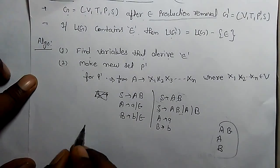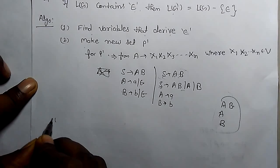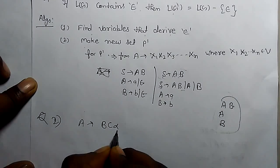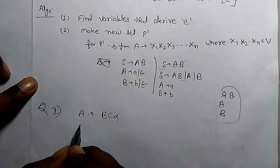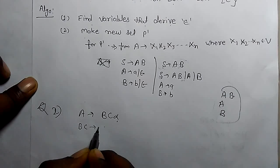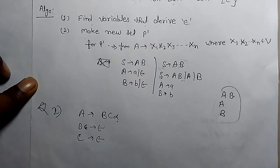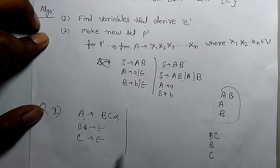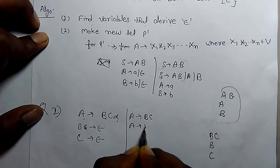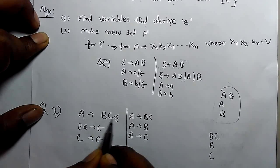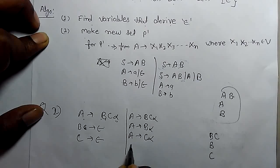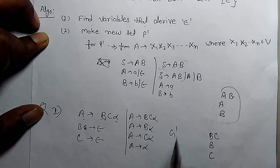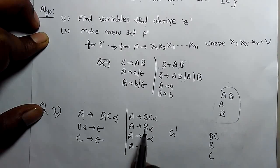Now a second example: A derives BC alpha, where alpha is a terminal, and B and C both derive null. What we have to do — for A derives BC, the combinations of B and C are: BC, B, or C. So we directly write A derives BC alpha, A derives B alpha, A derives C alpha. Since alpha is associated with each production, we write alpha with each one. And in the last we write A derives alpha. This gives us new grammar G dash with new production rule P dash which does not contain epsilon.